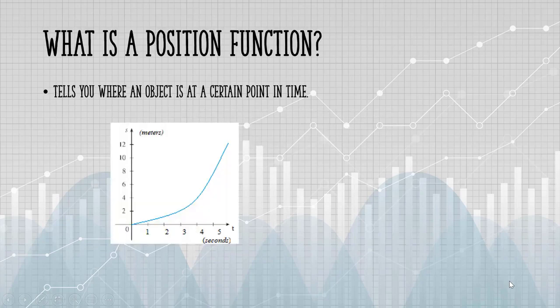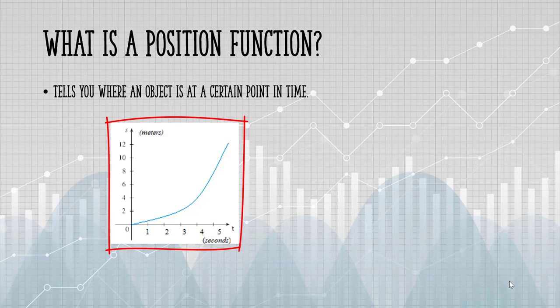The position function tells you where an object is at a certain point in time. For example, this graph of a position function tells you in meters where a car will be in the first few seconds after its start. An object's position is always relative to a location. In this example, the car's position at any point in time is relative to the car's starting point.